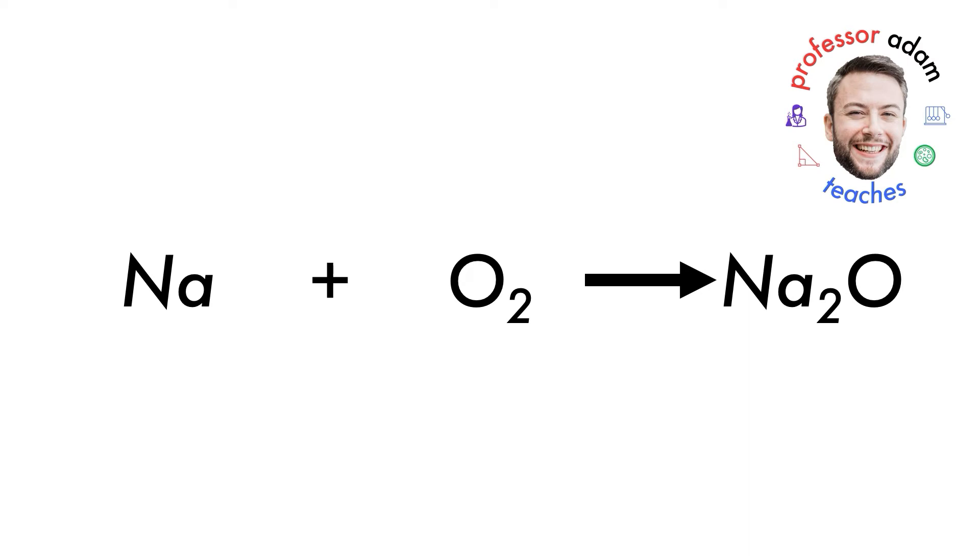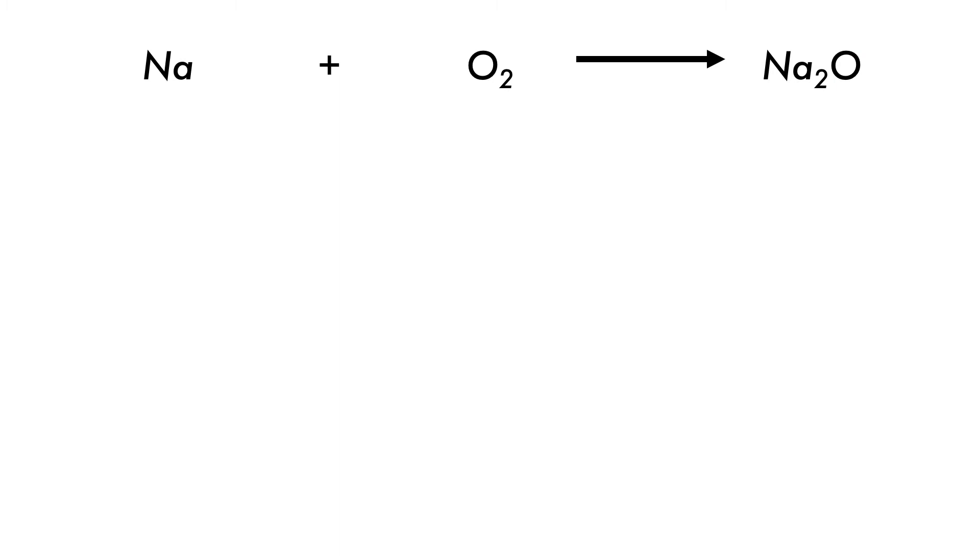Let's try to balance the reaction of sodium with oxygen to produce sodium oxide. We want to balance the reaction between sodium and oxygen to form sodium oxide, so we look at the numbers of elements on both sides.